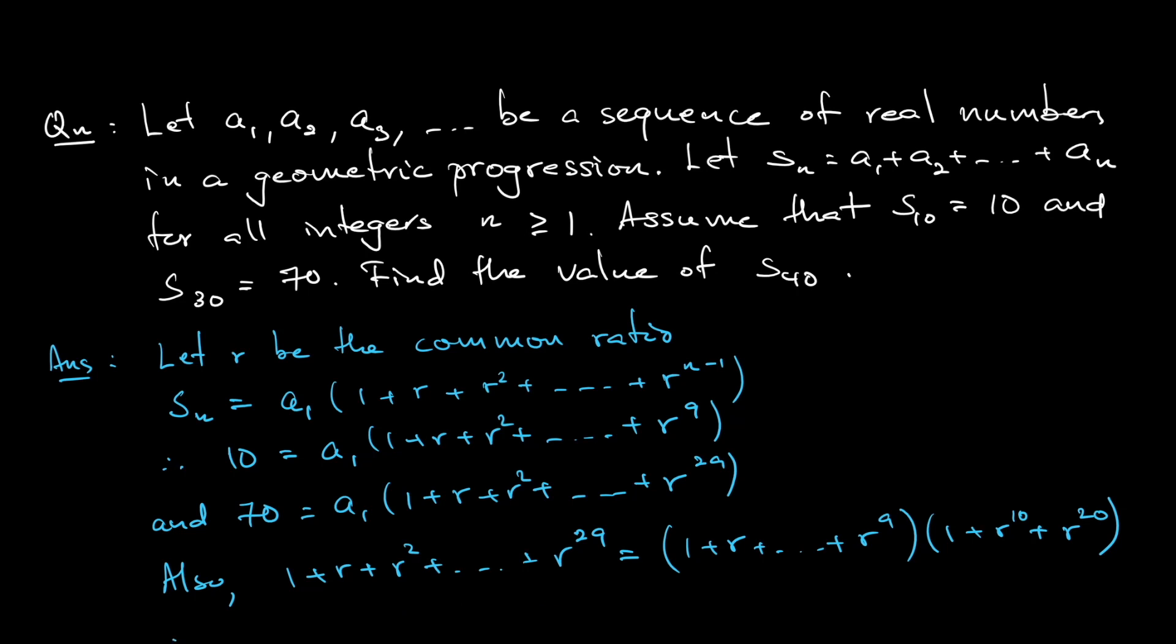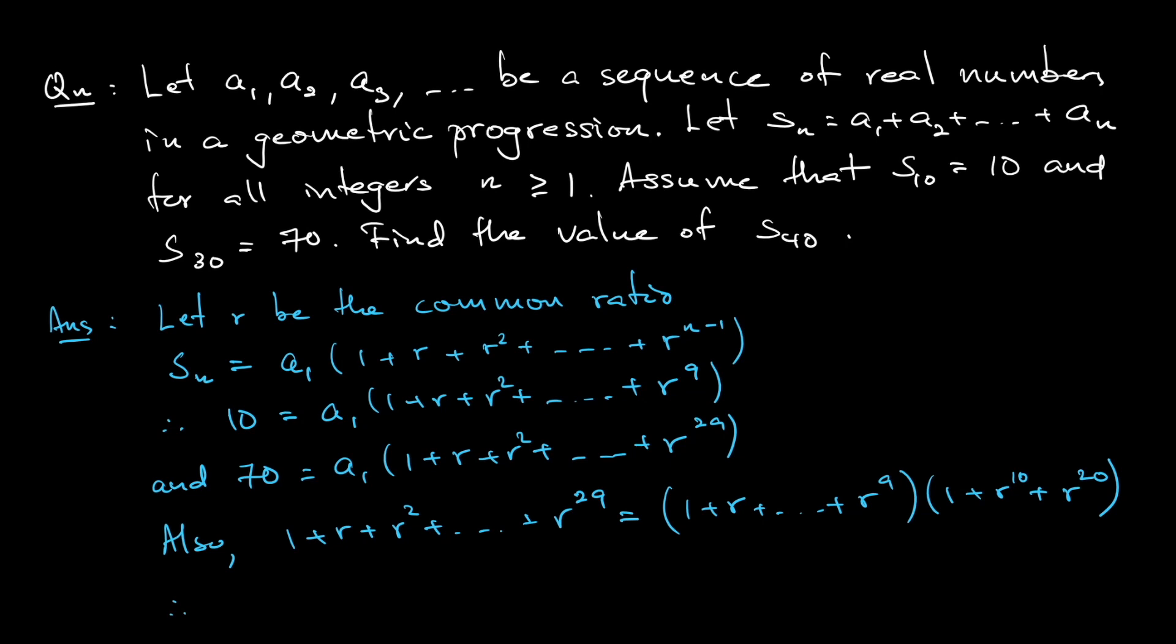So why do I need to do that? I know the value of all of this. 1 plus r plus all the way until r to the power of 29 is 70 divided by a1. 1 plus r all the way until r to the power of 9 is 10 over a1, multiplied by 1 plus r to the power of 10 plus r to the power of 20.